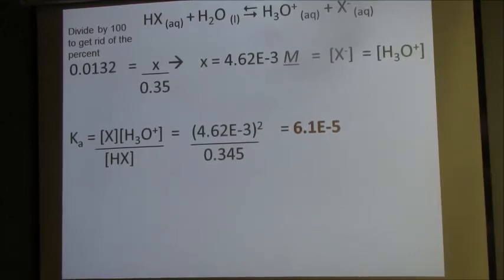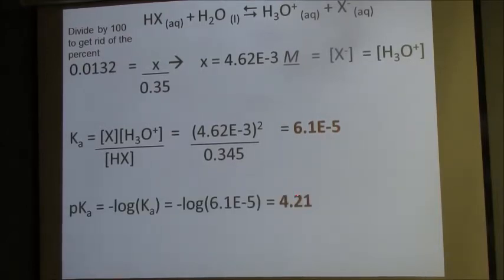And then to get a pKa, that little p just means take the negative log. So to convert a Ka into a pKa I just take the negative log of my Ka, so 4.21.